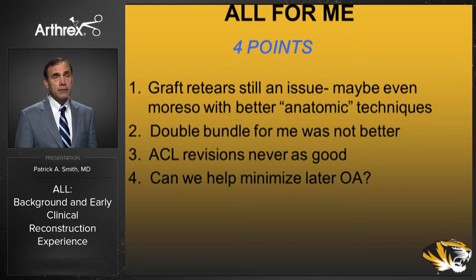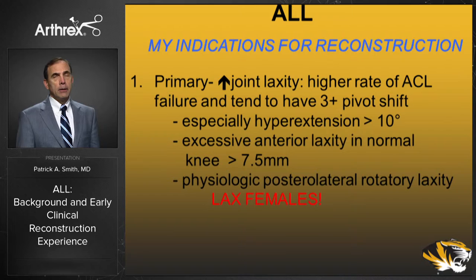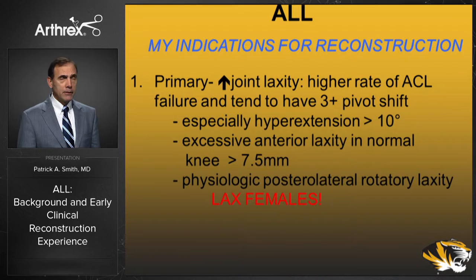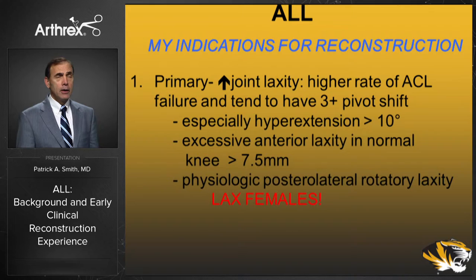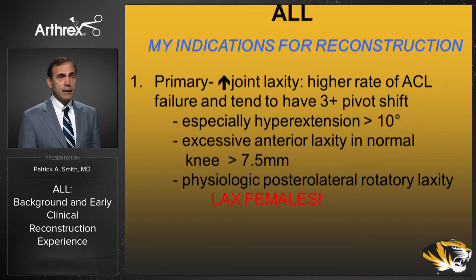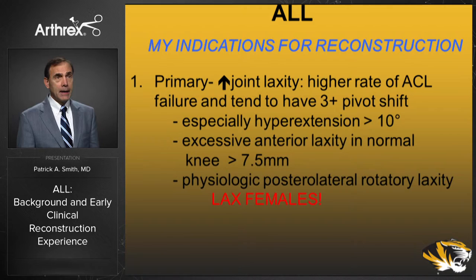In a primary ACL reconstruction, my indications for adding an ALL center on athletes with increased joint laxity and a really positive pivot shift — those patients are at increased risk for retears. Specifically, if a patient has excessive hyperextension greater than 10 degrees, or excessive laxity in their normal knee greater than 7.5 millimeters, or what we call physiologic posterolateral rotatory laxity — frequently in females with a posterolateral gapping at 30 degrees or a positive dial test — those patients are at particular risk. It's usually the lax female where I'm now adding an ALL.